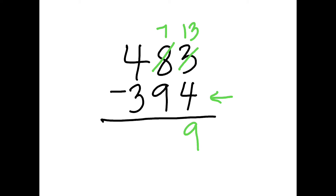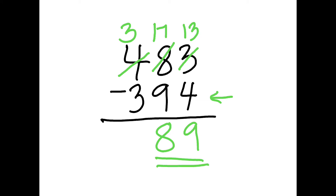Then I go to my tens column and I see I have more on the floor again — 9 is bigger than 7. So I go next door to my 4 and borrow a 10 — that becomes a 3 — and that 10 is given to my 7, so now I have 17. 17 take away 9 is 8. Then I do my hundreds: 3 take away 3 is 0. So our answer is 89.